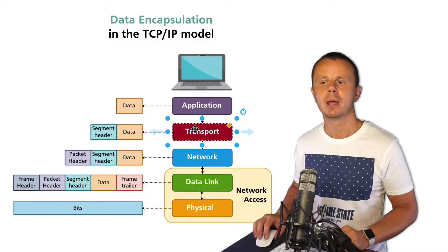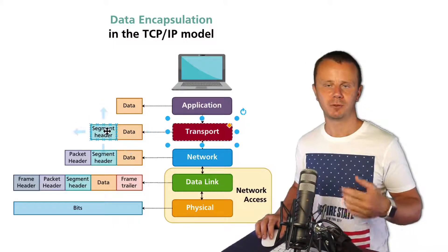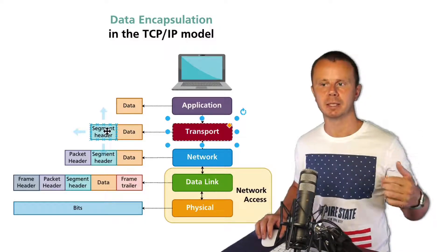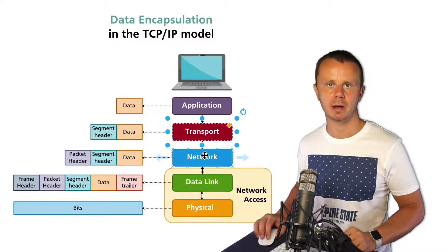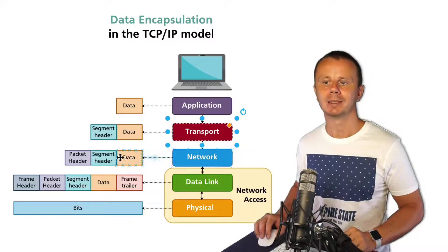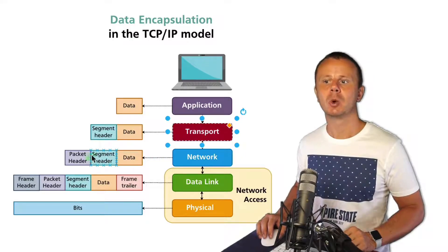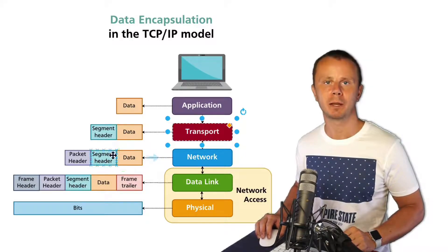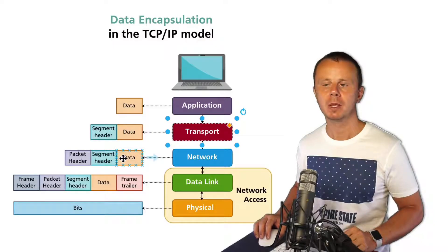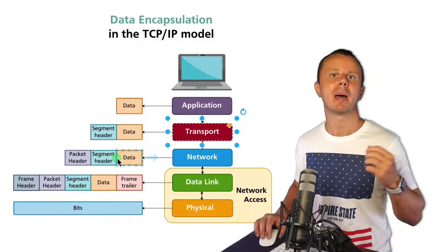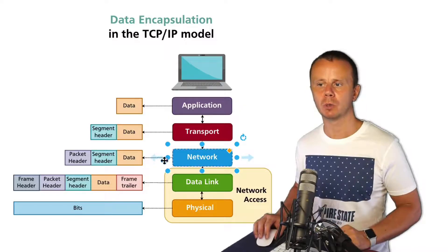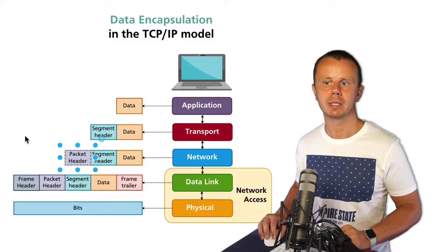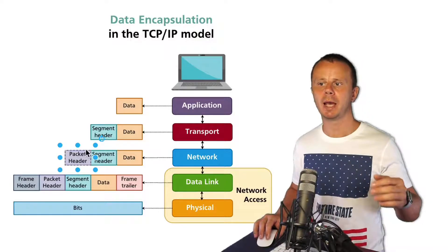Afterwards, this expanded data goes to the next layer — the network layer — and the network layer adds one more header to the existing data with the segment header. This is called a packet header, because a packet is the PDU for the network layer.